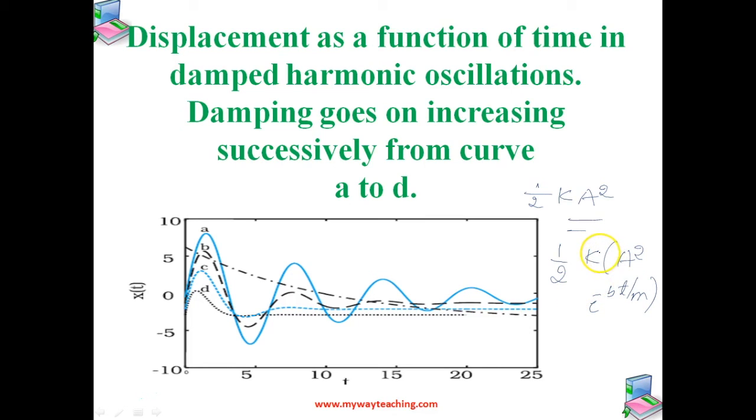This gives the total energy of the system. It also decreases exponentially with time. For small damping means that the dimensionless ratio B by root KM is much less than 1.